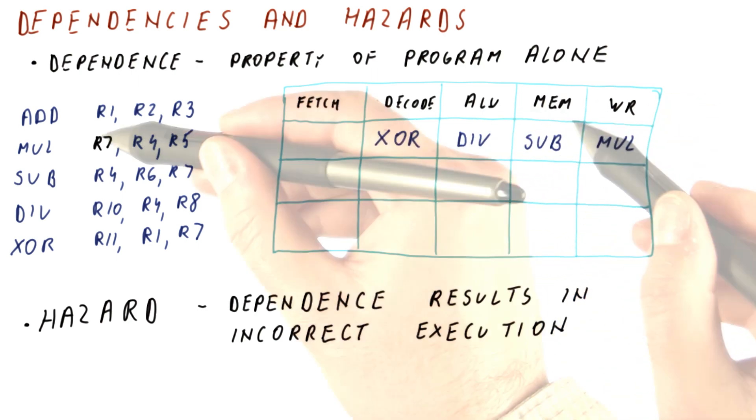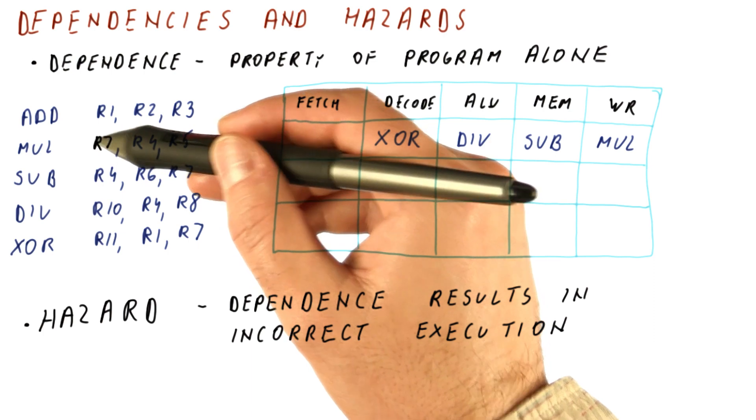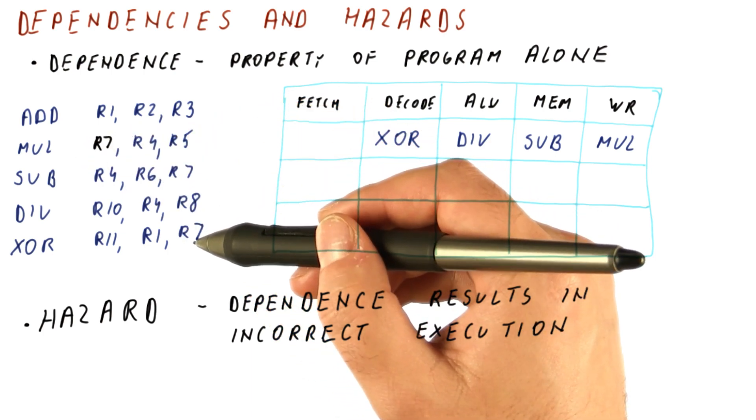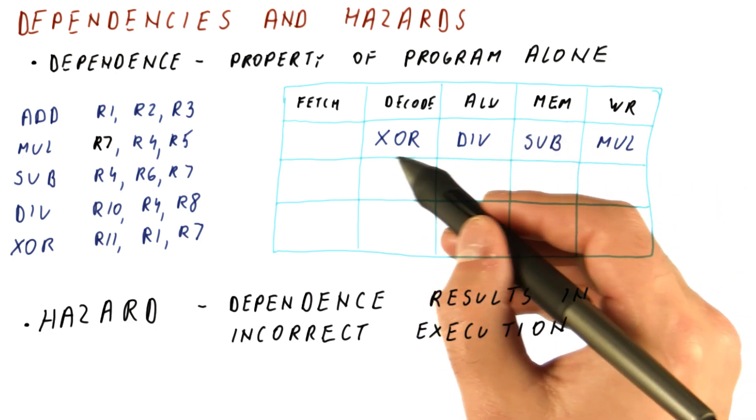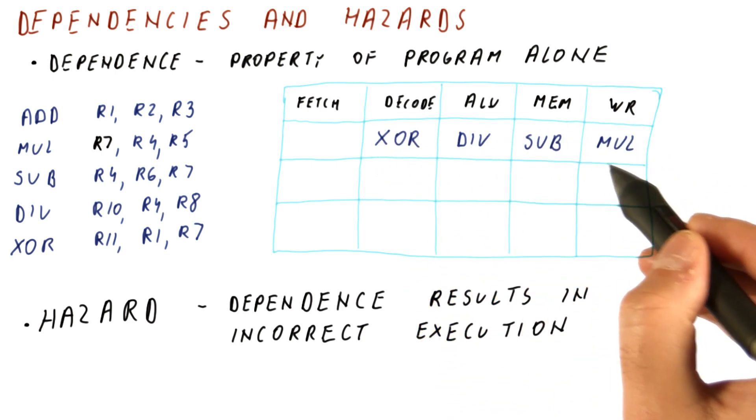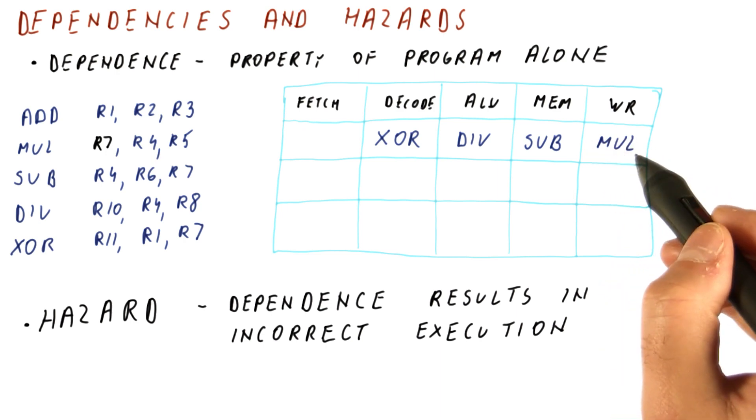However, the dependence on R7 between the multiply and XOR is potentially a problem in this pipeline because the XOR is reading R7 in the cycle during which multiply is writing it to the register.